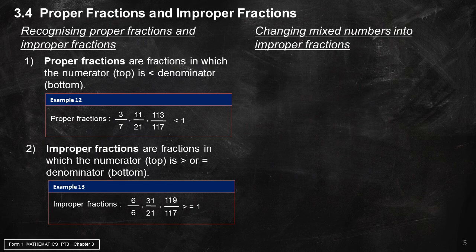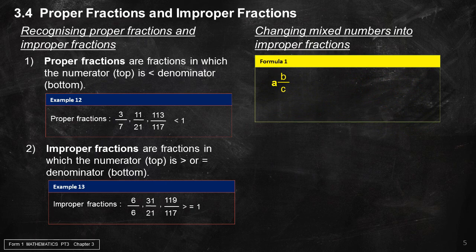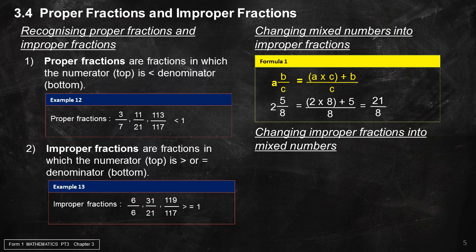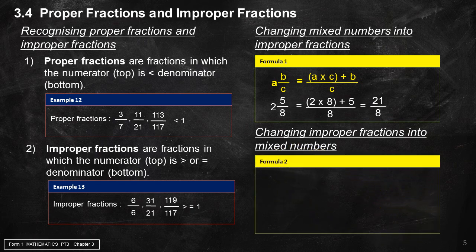Changing mixed numbers into improper fractions — Formula 1: A and B over C can be written as (A times C plus B) divided by C. Example: 2 and 5 over 8 equals 21 over 8. Changing improper fractions into mixed numbers — Formula 2: 17 over 8 is equivalent to 17 divided by 8, which equals 2 and 1 over 8.